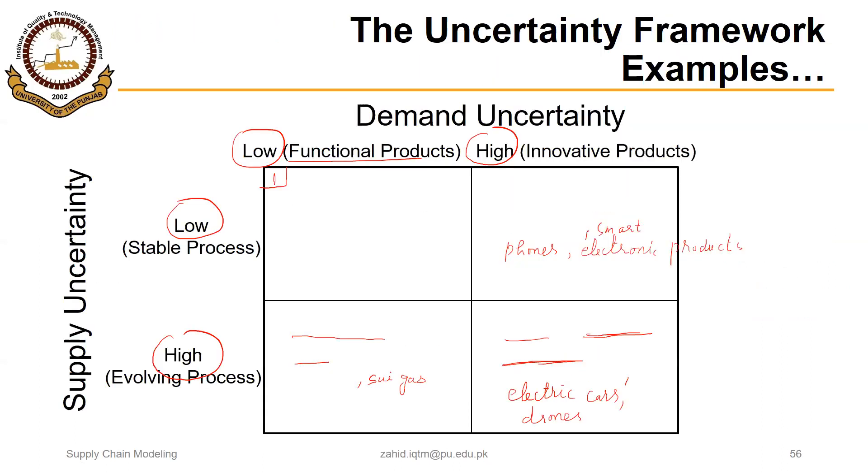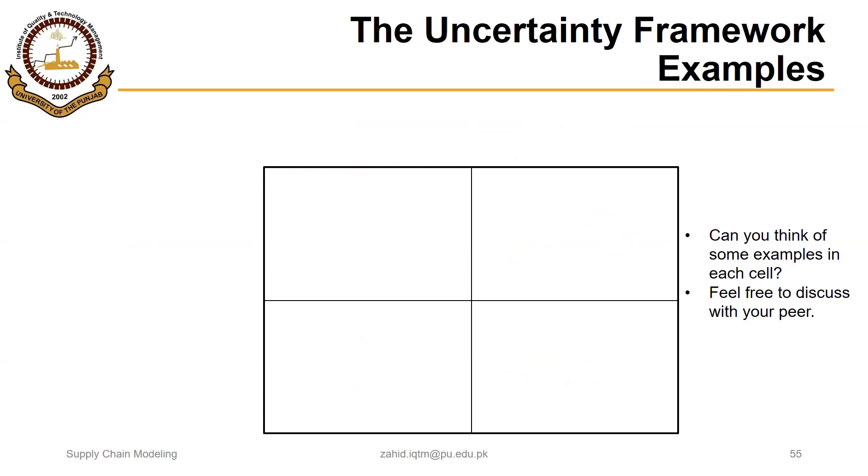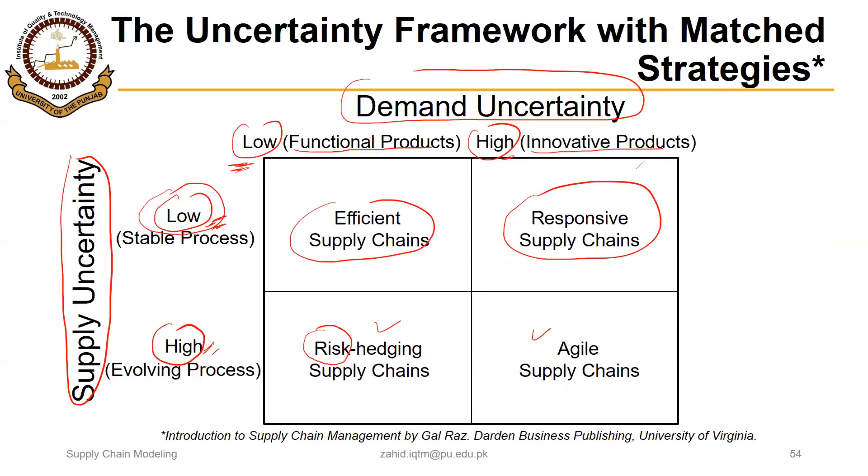These were the four types of supply chains. I hope the concept is clear. Thank you.